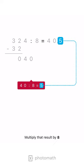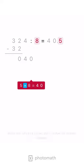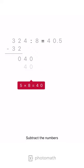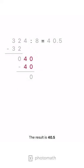Multiply that result by 8. Write the product under the number we initially divided. Subtract the numbers. The result is 40.5.